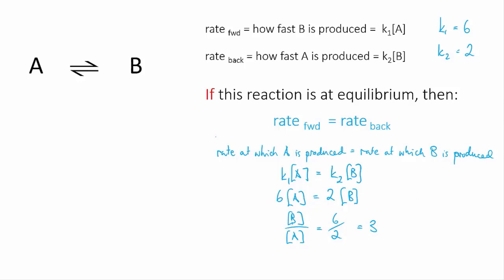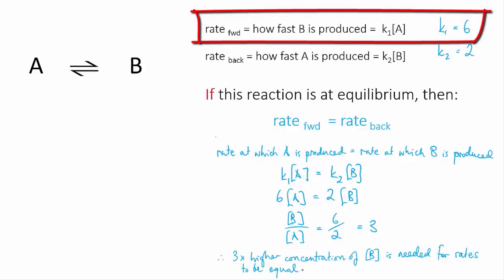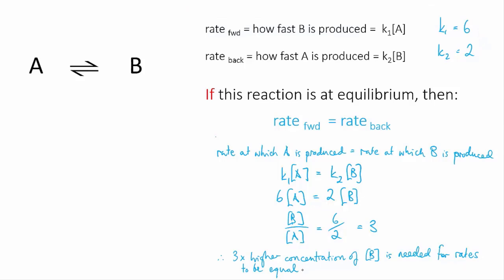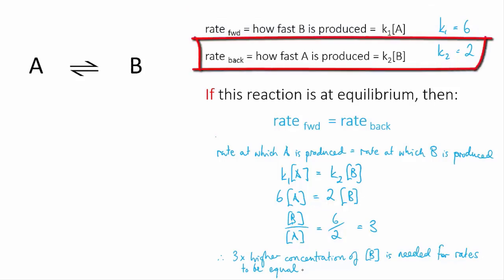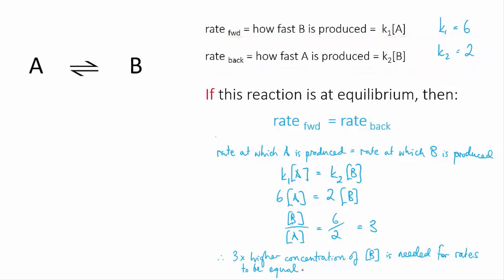So what that means is, in order for the forward and reverse reactions to be equal in this situation, you would need the concentration of B to be 3 times as high as that of A. This is because the forward reaction in this case, which relies on the concentration of A, happens more easily. It has a higher K, so in kinetics terms we would say that the probability of a successful collision is higher. For the reverse reaction, K is lower, meaning there's a lower probability of a successful collision. So a higher concentration of that reactant, of B, is needed to get the same rate of reaction.